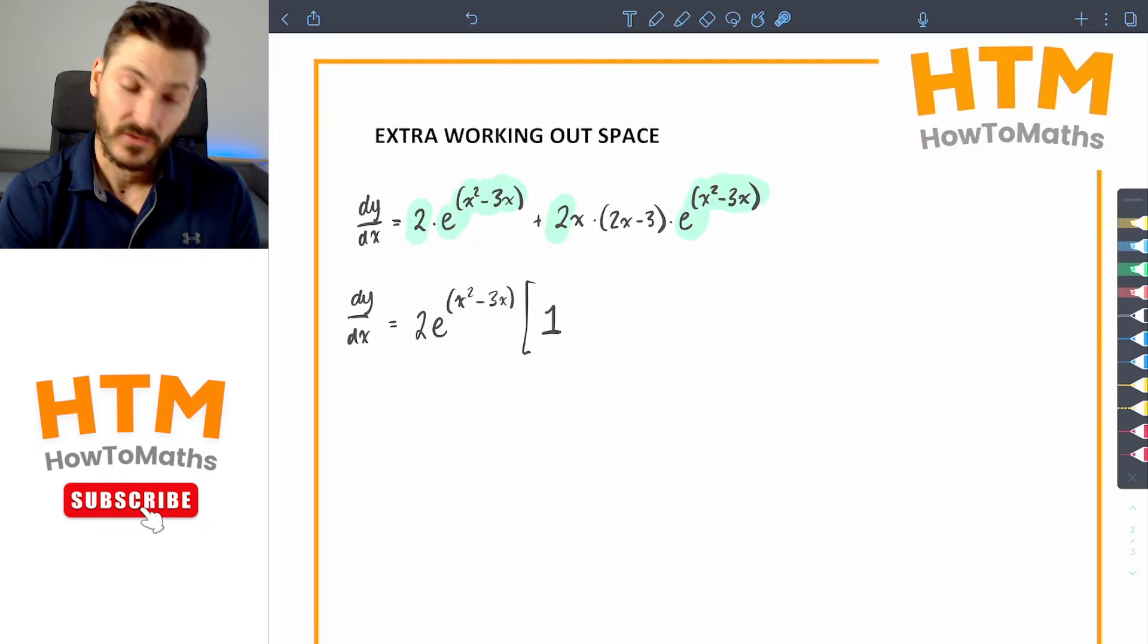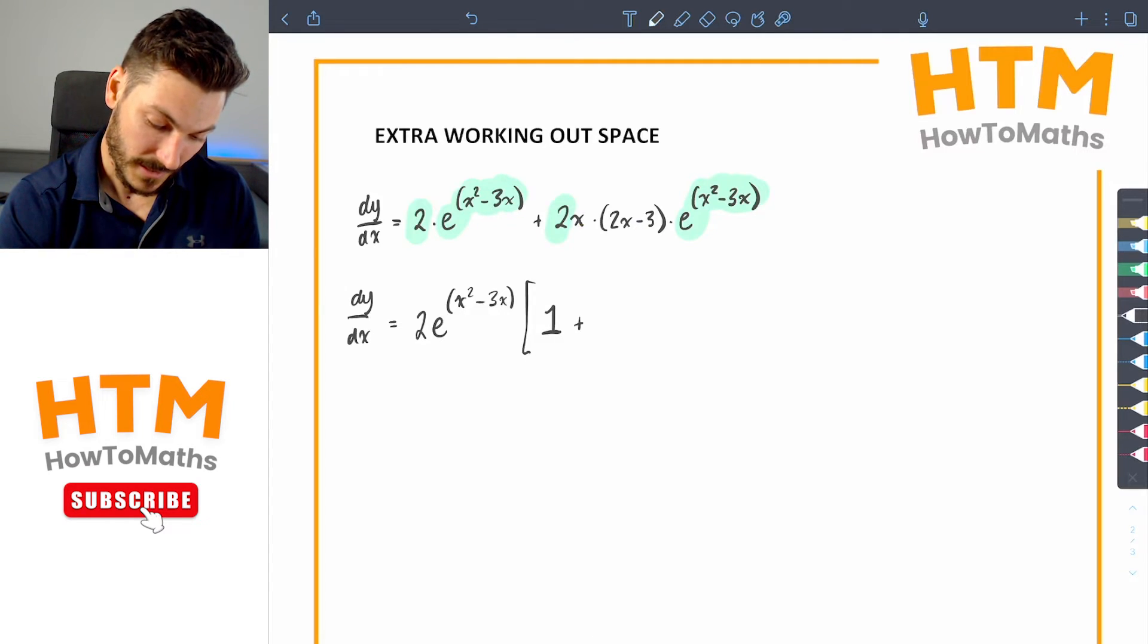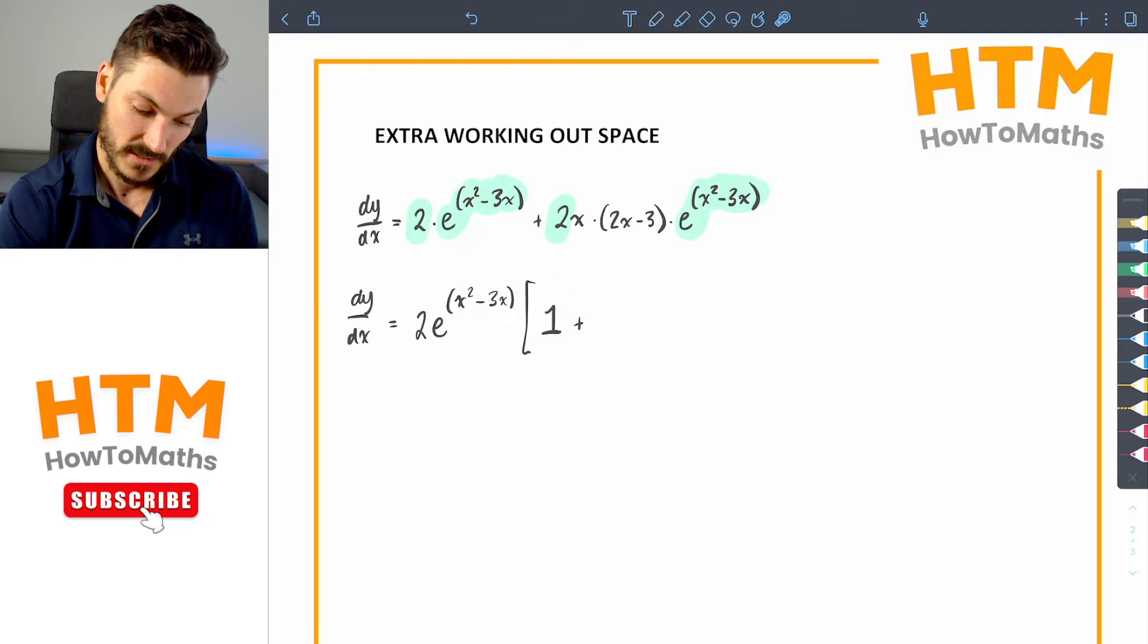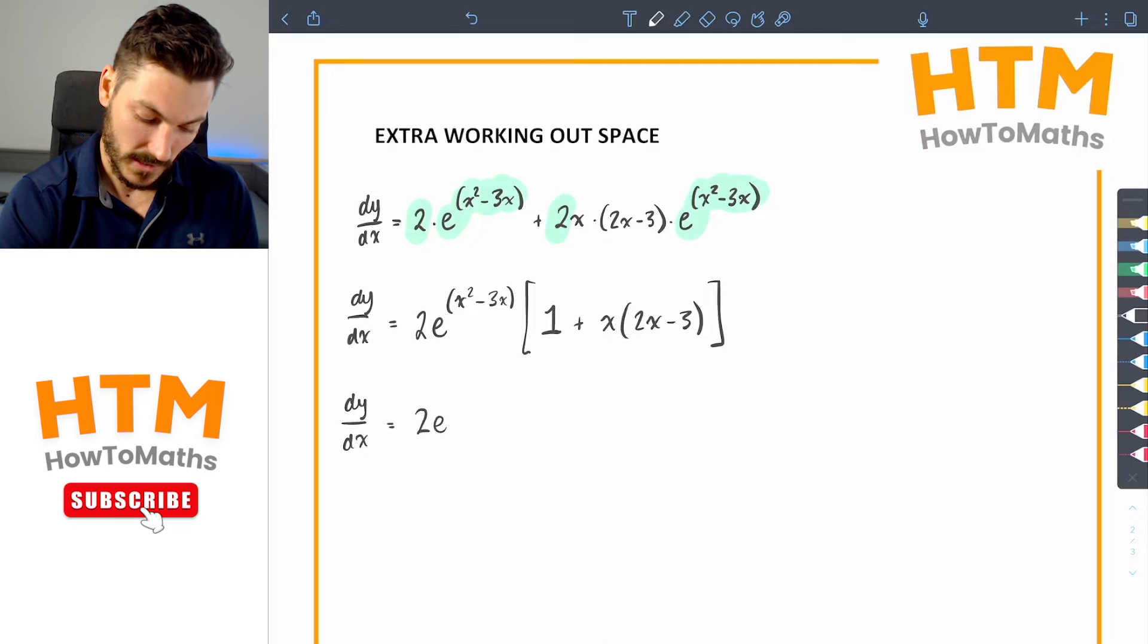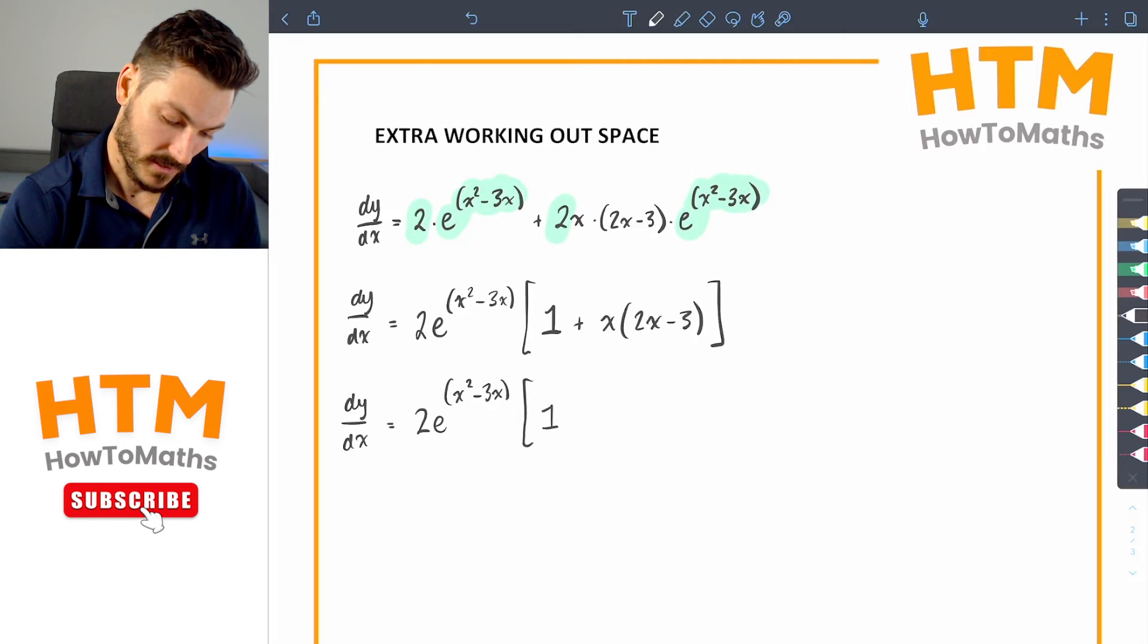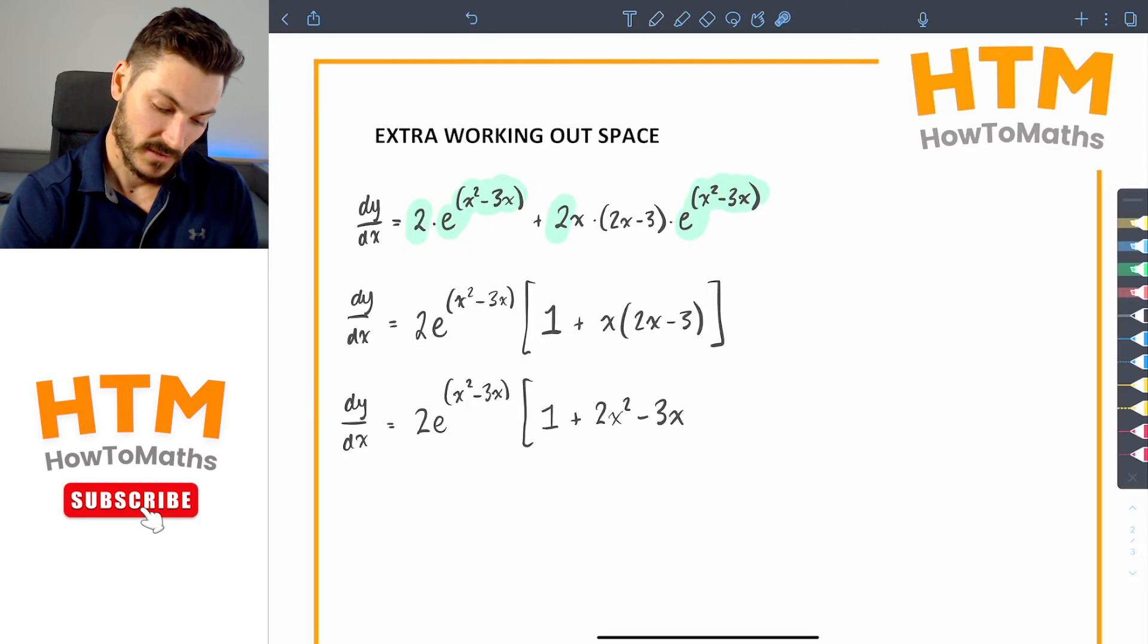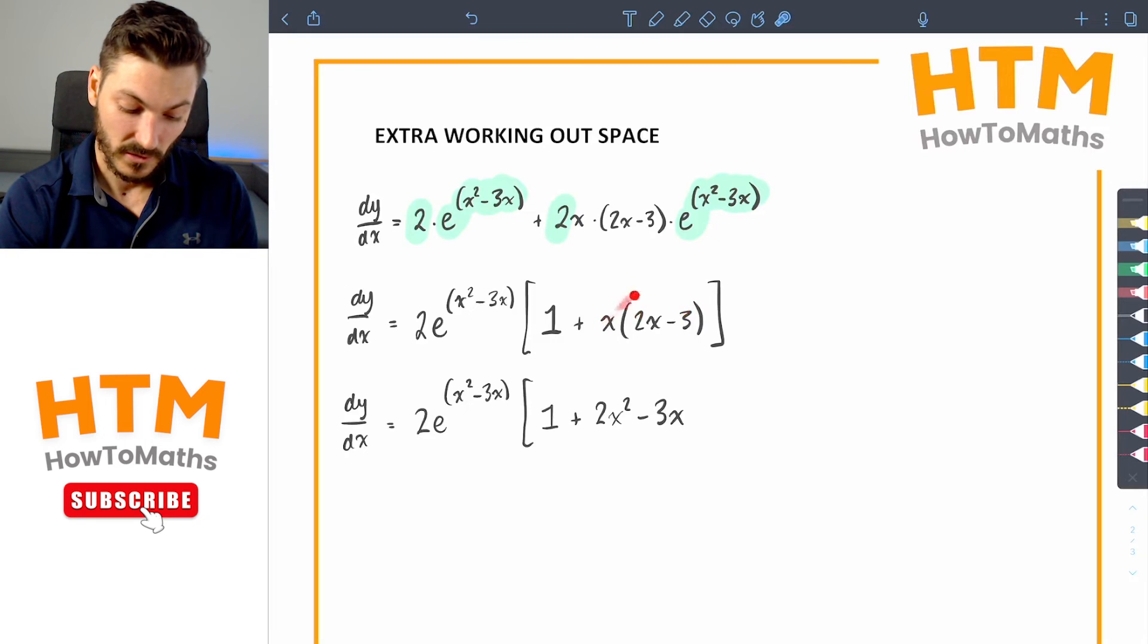And then I've got to think, what do I times 2e to the x squared minus 3x, which is this 2, and this is this. It's x times 2x minus 3. So plus, it's a plus because of this plus here, that drags down. So we have x times 2x minus 3, which we can simplify as well. So dy dx is 2e to the x squared minus 3x times by 1 plus 2x squared minus 3x. Make sure you are multiplying the x by both of these terms inside the brackets.